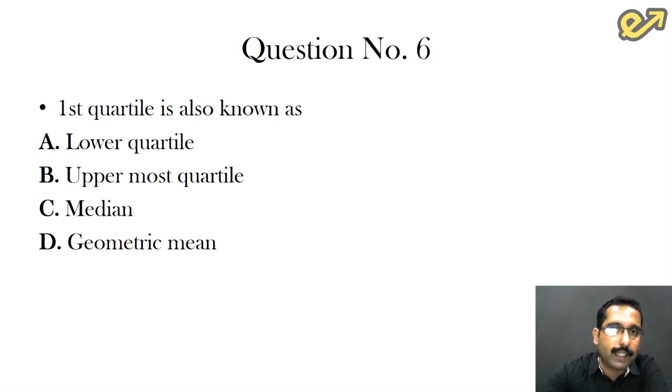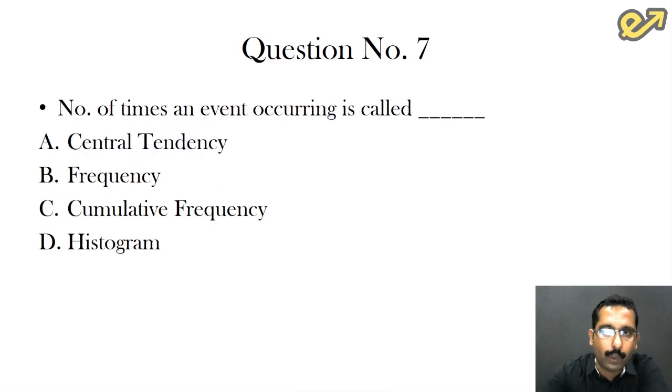Question number six: first quartile is also known as? This is a memory-based question. You just have to know this. The first quartile is generally called the lower quartile. Question number seven: number of times an event occurring is called? This is the most basic question that can be asked in economics, and the answer for this is frequency.